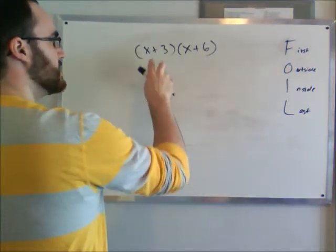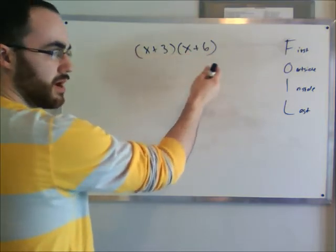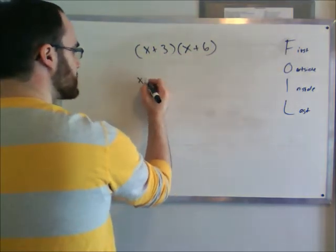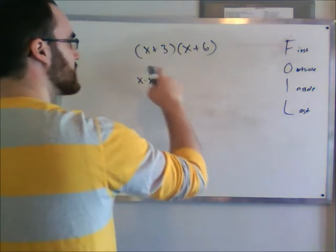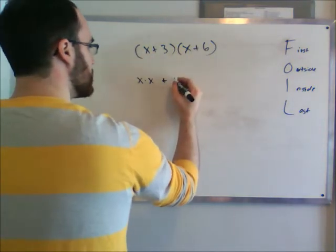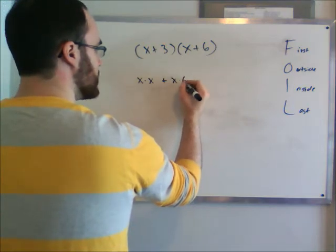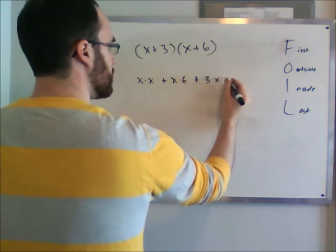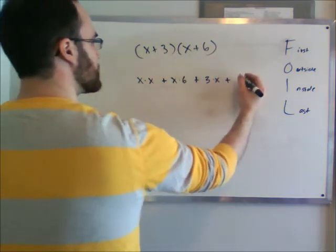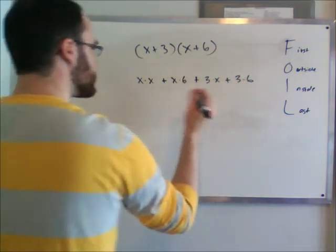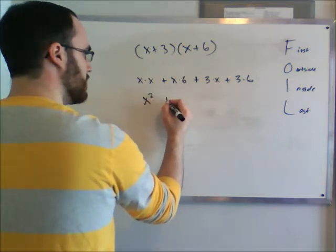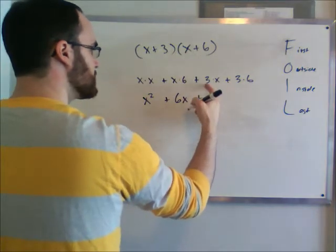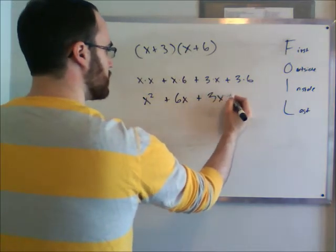What that means is basically to take the first term from each binomial, x times x, and we'll do that first. So that will be x times x plus the outside, x times 6, plus the inside, 3 times x, plus the last, which is 3 times 6. To work this all out, we're going to get x squared plus 6x plus 3x plus 18.